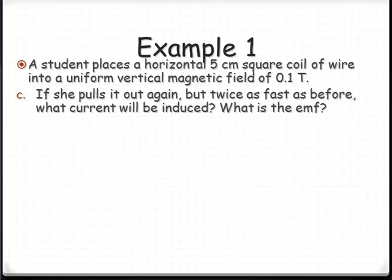Part C. Now she pulls it out again, but she does it twice as fast as before. What current will she induce? Since current, the induced current is proportional to this change, then she's going to see a positive 4 mA as she pulls it out.